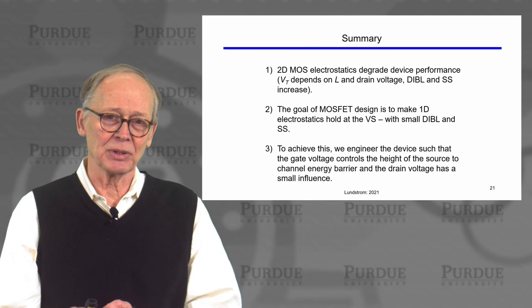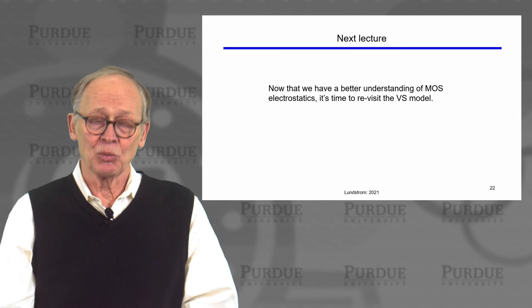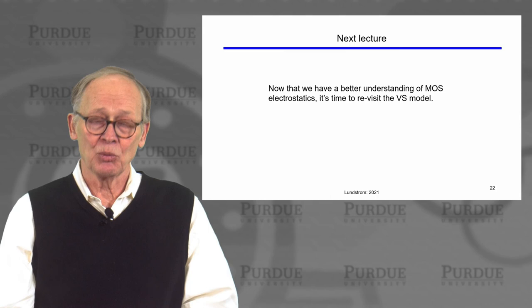In this lecture, we took a qualitative look at two-dimensional electrostatics and how they affect important device parameters: why threshold voltage depends on channel length and drain voltage, what causes DIBL and sub-threshold swing to increase, and what causes punch-through. The goal of MOSFET design is to minimize these two-dimensional effects and make the simple mobile charge relation C_OX(VG − VT) hold at the virtual source. In the next lecture, we'll revisit our virtual source model and, based on our better understanding of MOS electrostatics and mobile charge, see if we can improve it.